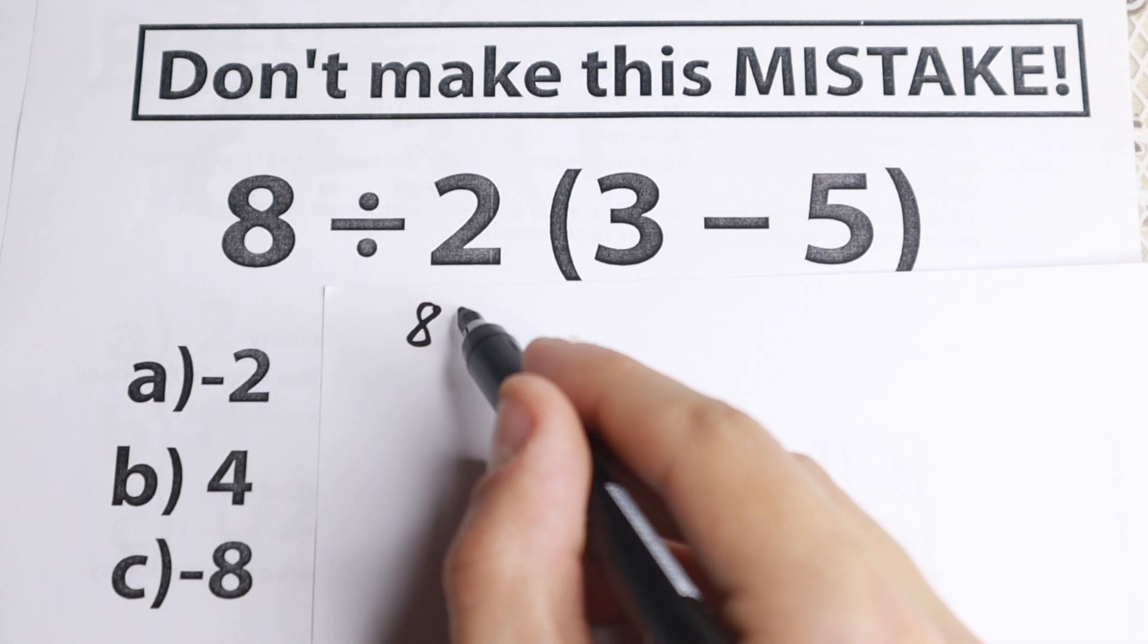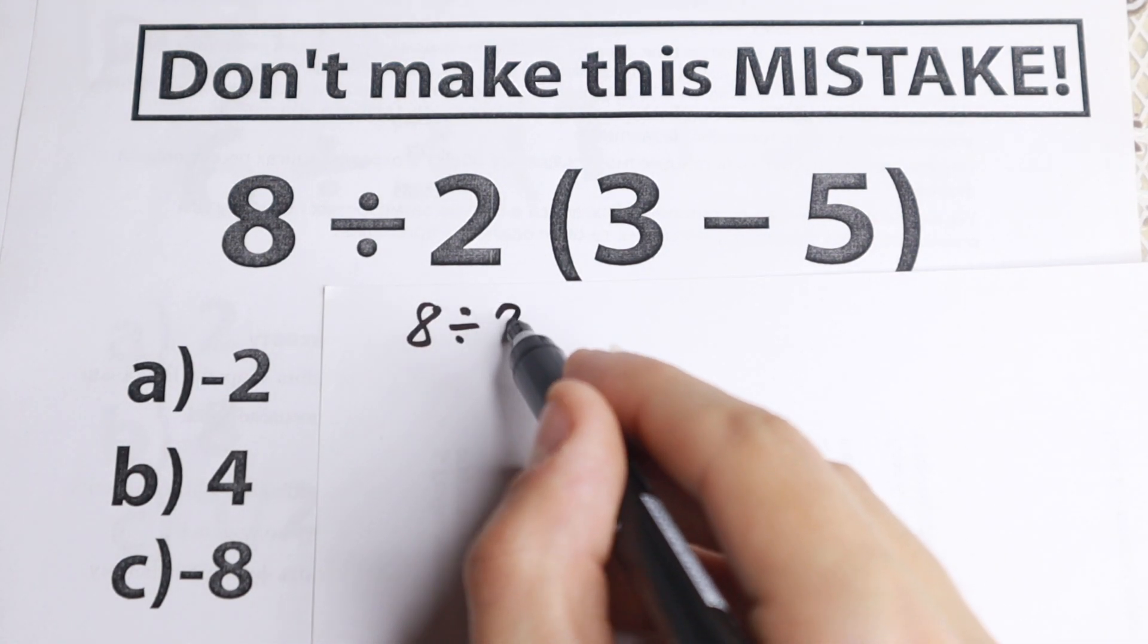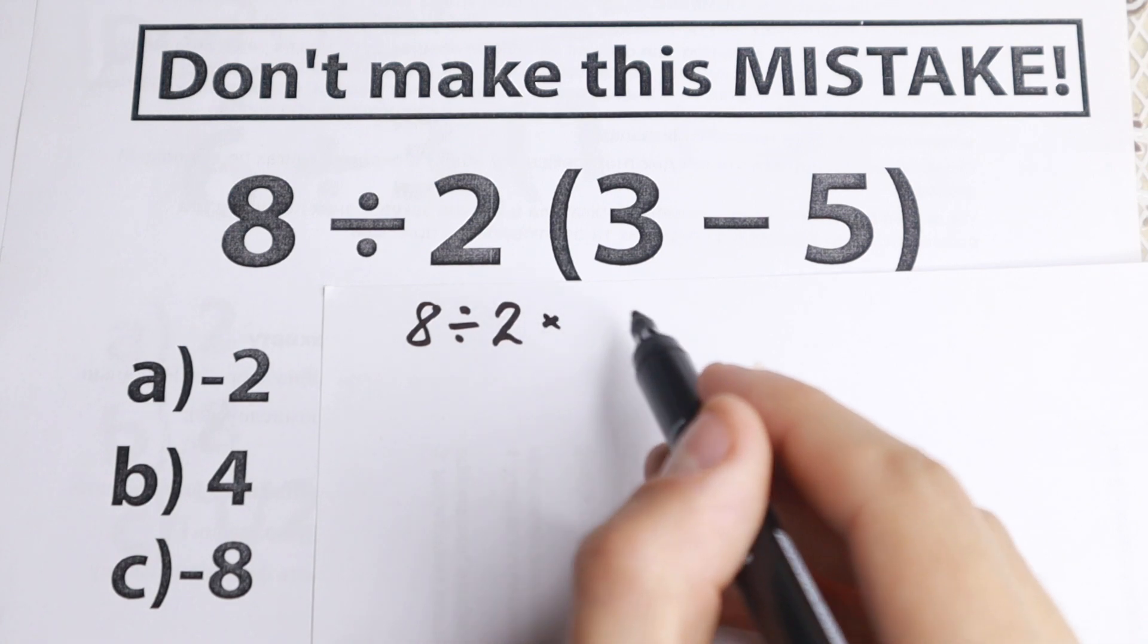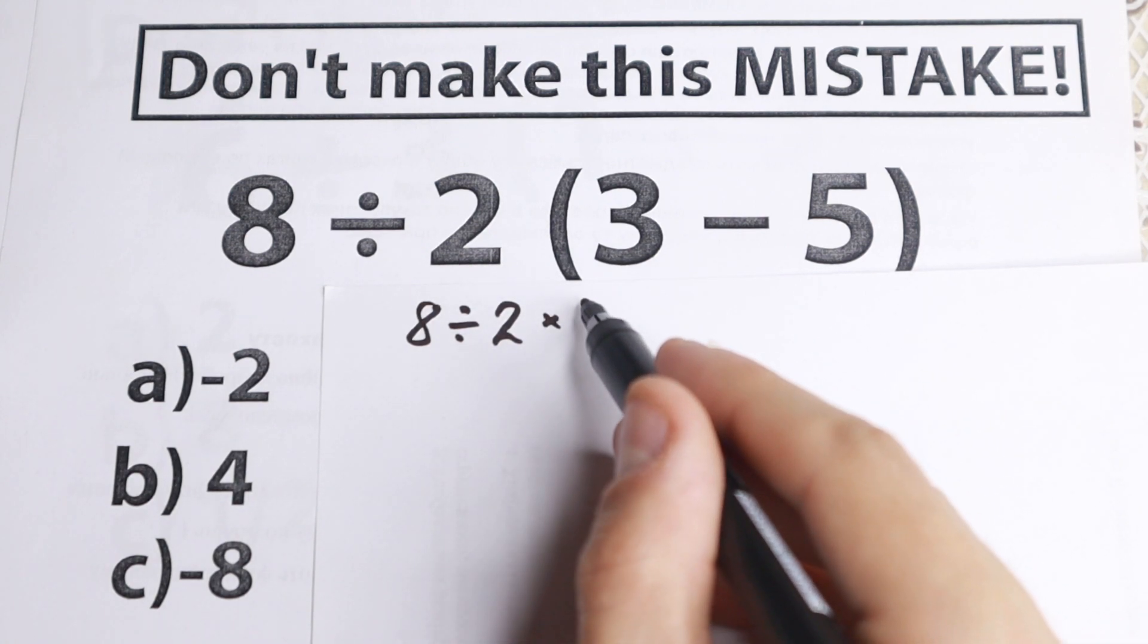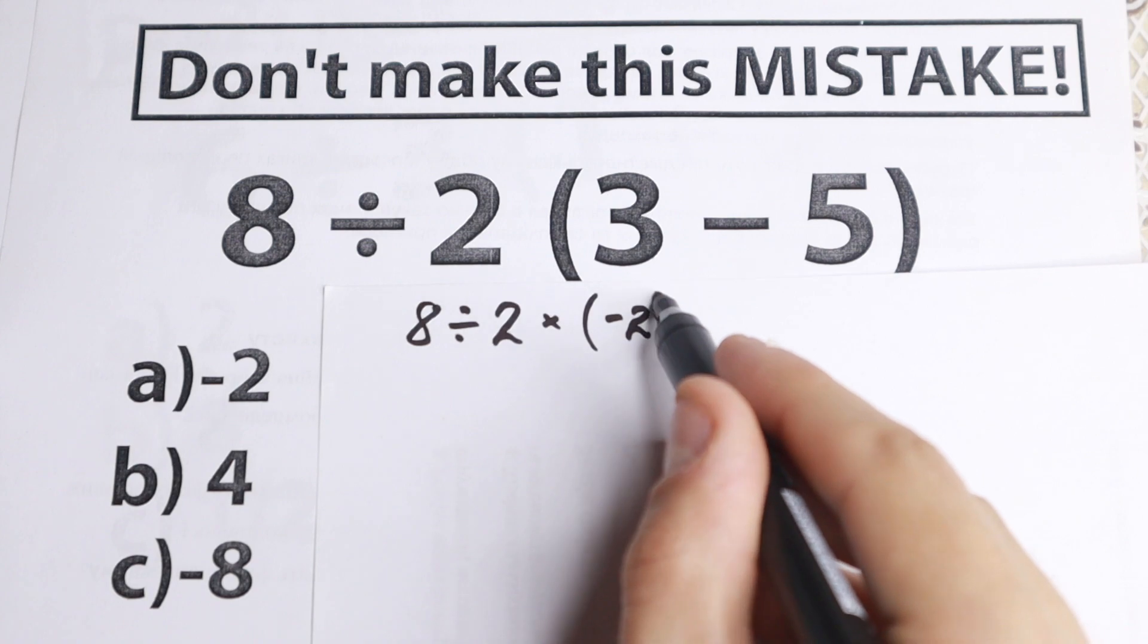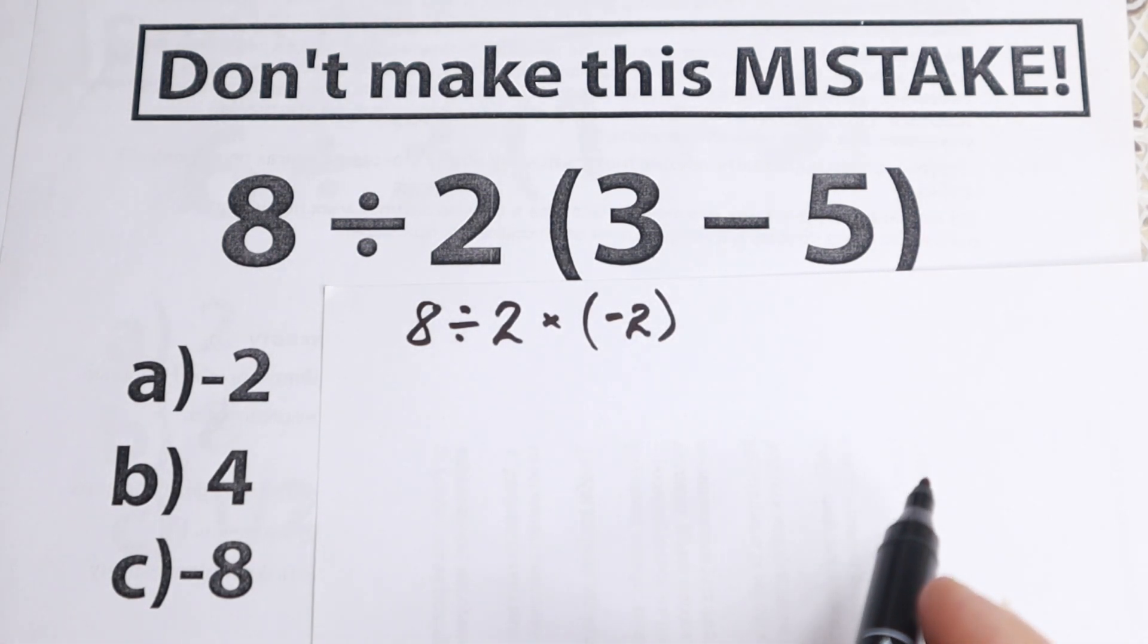So we will have like 8 dividing by 2 and in parentheses 3 minus 5, which is equal to minus 2. So we do this first step.